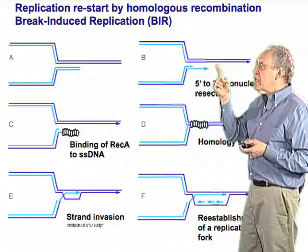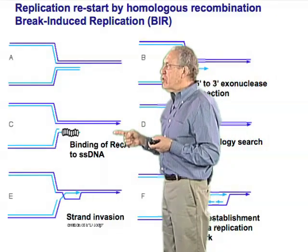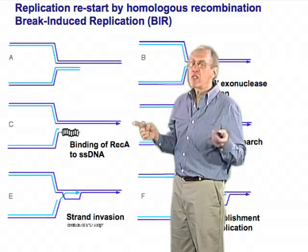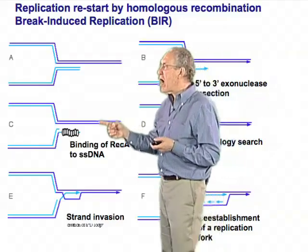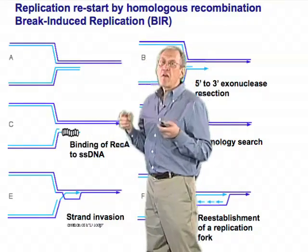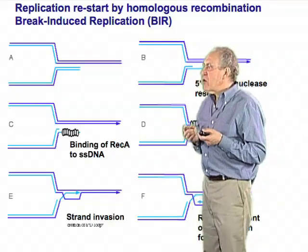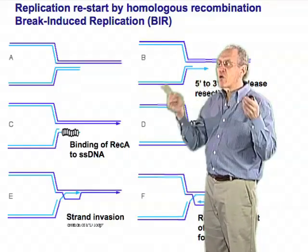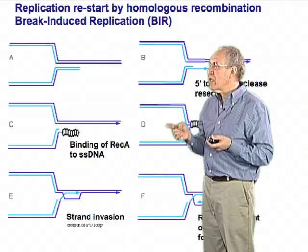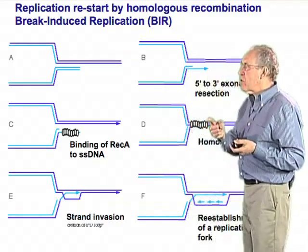This single-stranded DNA attracts the recombinase protein — here called RecA, which is the bacterial name for the Rad51 protein. RecA, or Rad51, binds to this single-stranded piece of DNA and forms a filament. This filament formed on single-stranded DNA is an extraordinary machine capable of searching the entire space of the genome to find sequences homologous to the single-stranded DNA inside the filament.